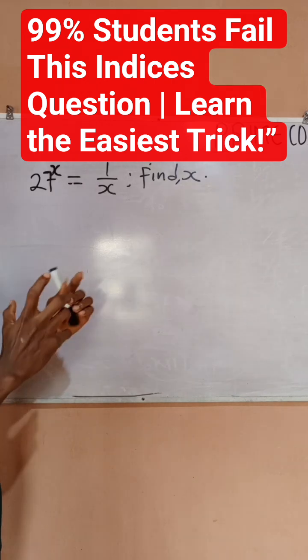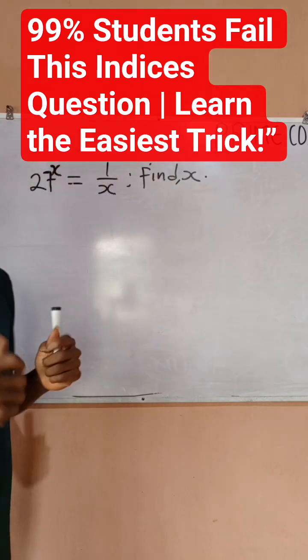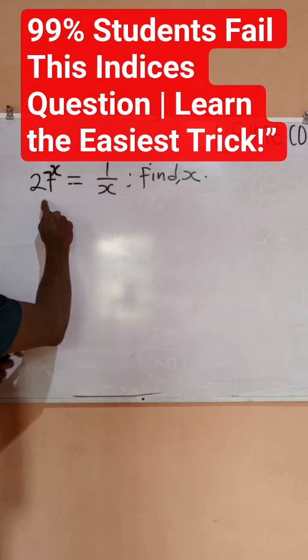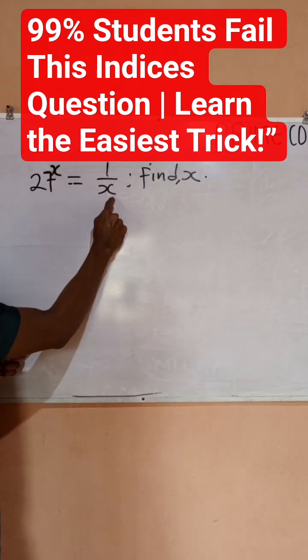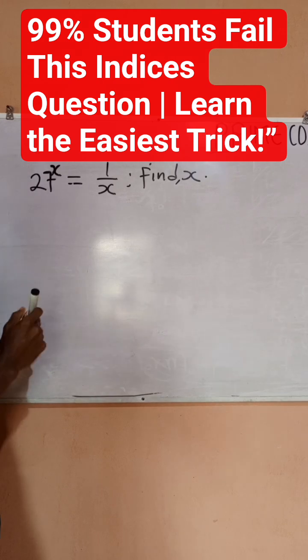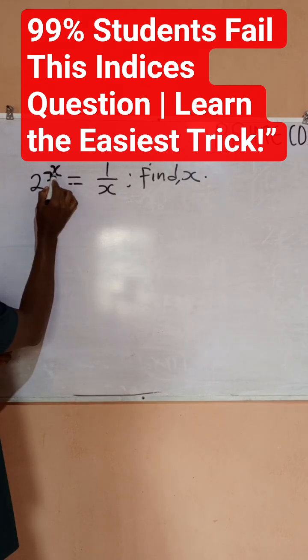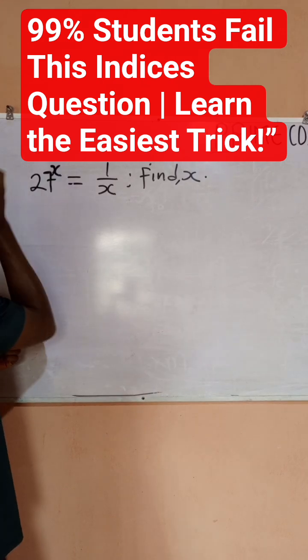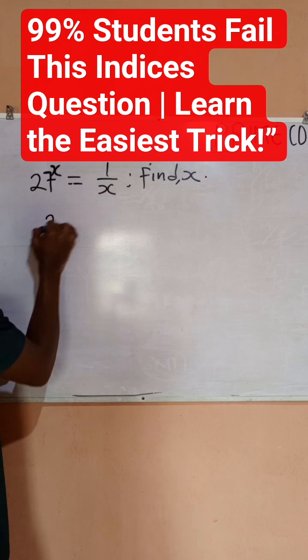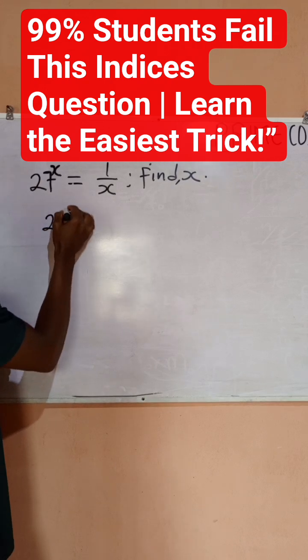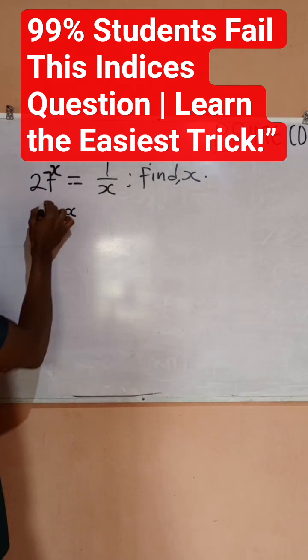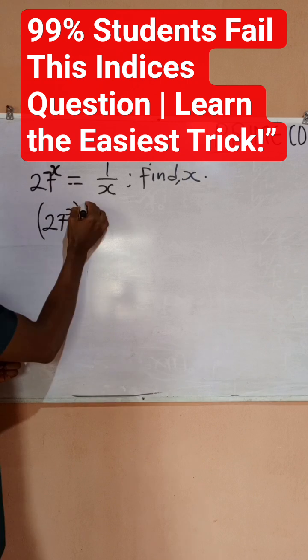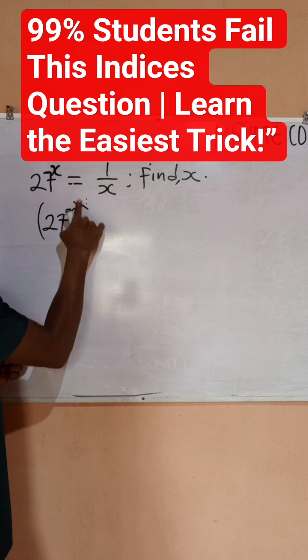I'm going to multiply both powers by 1 over x. I want to remove this x from the power, so I would multiply by the inverse. This means I would have 27 raised to power x multiplied by 1 divided by x.